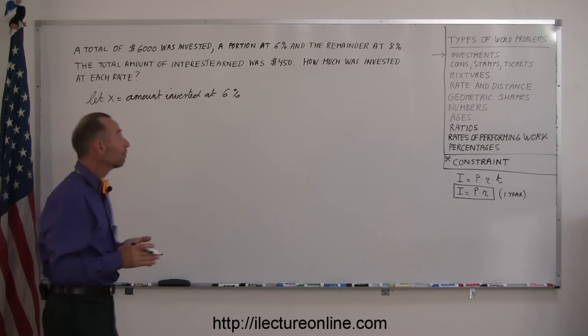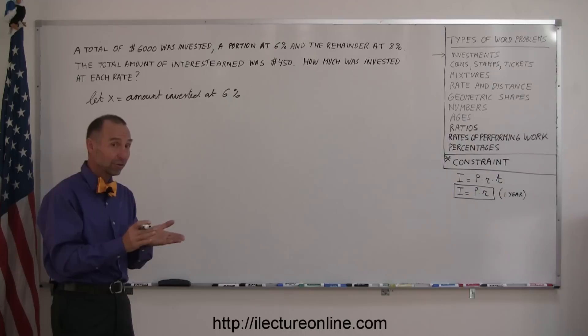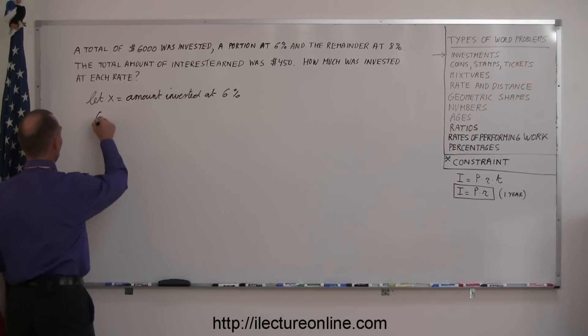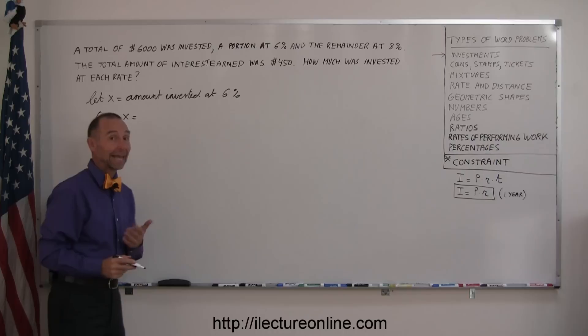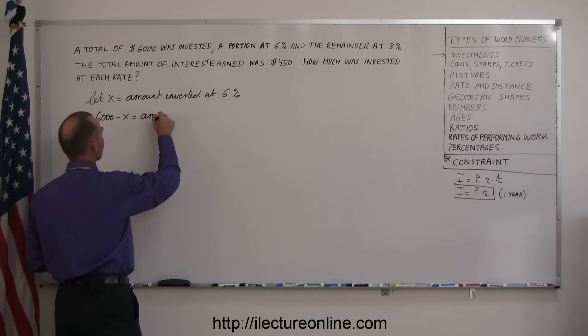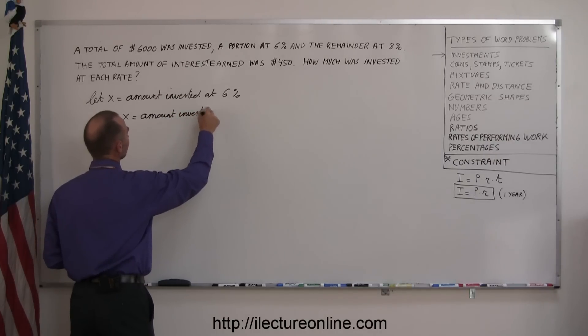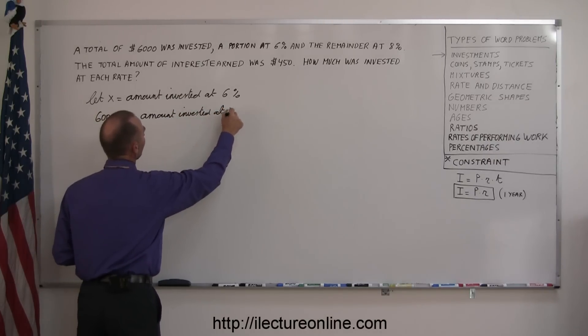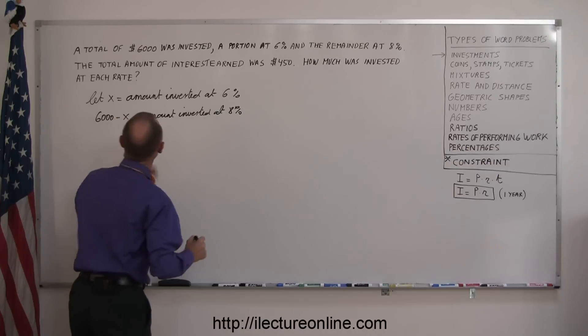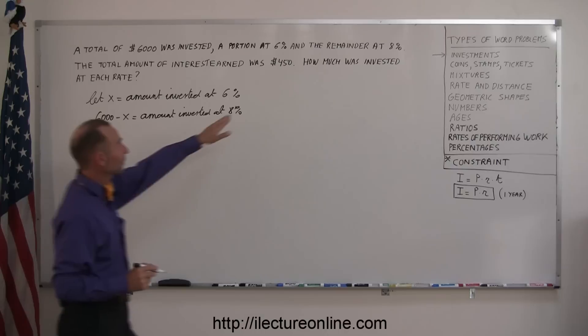Well, if the total was $6,000, and X was invested at 6%, then the difference, $6,000 minus X, is equal to the amount invested at 8%, right? $6,000 minus X is what's left over, so that's the amount invested at 8%.